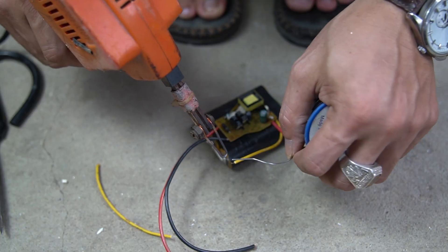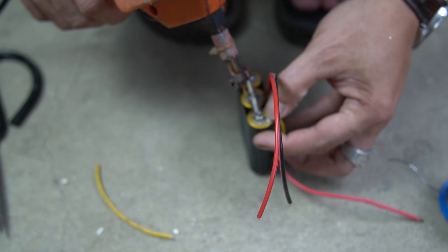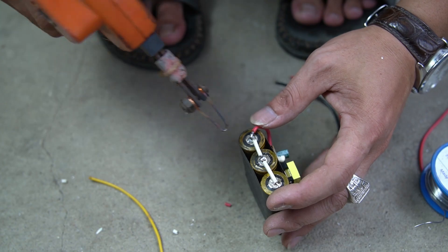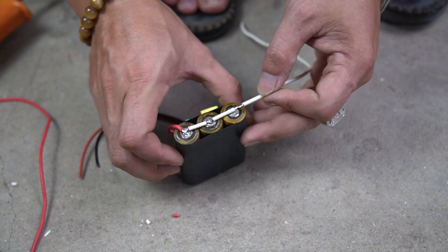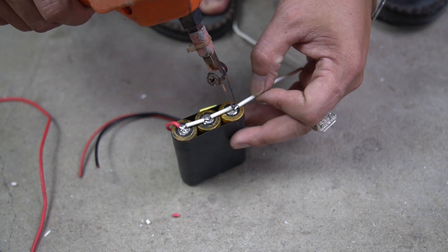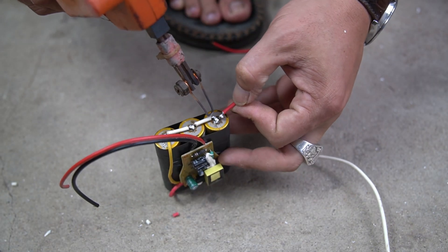Next, I will connect the wires from the circuit to the two terminals of the battery. I will connect the red wire to the positive terminal of the battery and the yellow wire to the negative terminal.